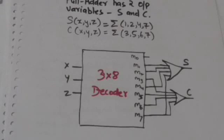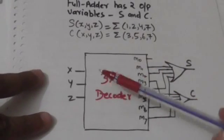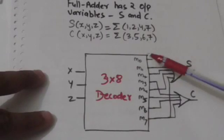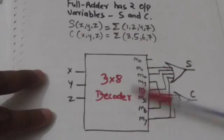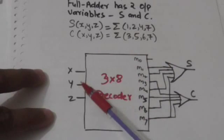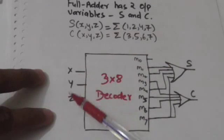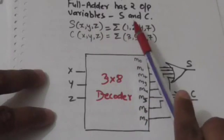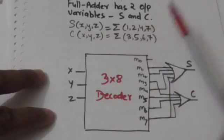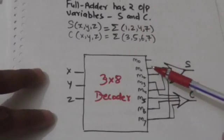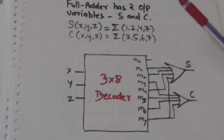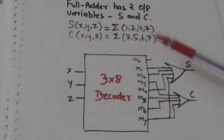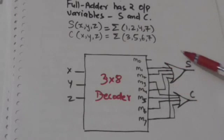Here is a 3-to-8 line decoder. It has three input variables X, Y, and Z, and its output would be 8 minterms of these three input variables. S is the sum of minterms m1, m2, m4, and m7.